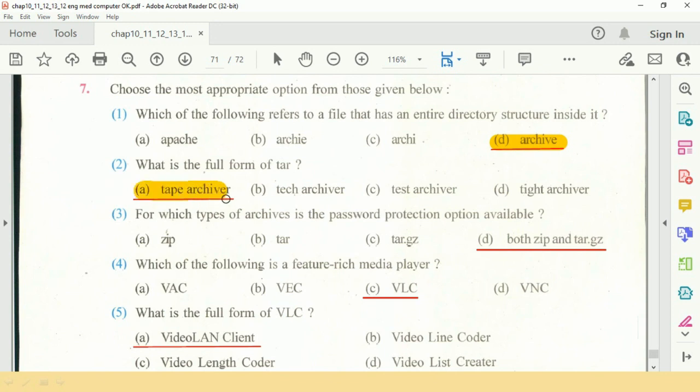Question number 3 is for which type of archiver is password protection option available? The answer is option D, both ZIP and TAR.GZ.